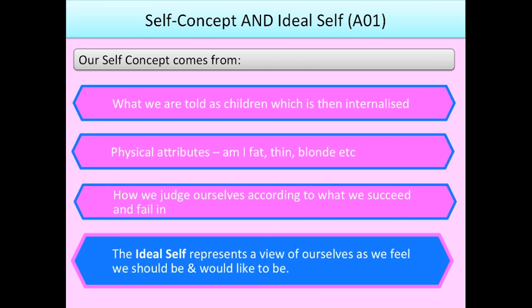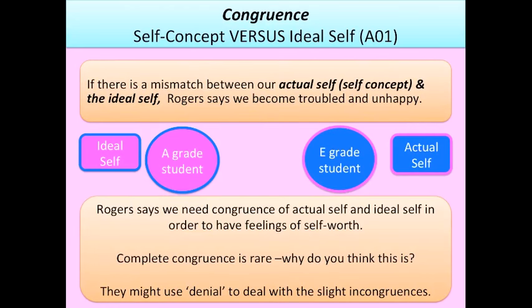The ideal self represents a view of ourselves as we feel we should be and would like to be — how you really want to be — and that might be different to your self-concept or actual self. The next term you need to know is congruence. If something is congruent it is in line with something else, so congruence here talks about whether your self-concept is in line with your ideal self — are they congruent or incongruent?